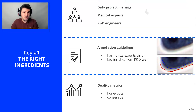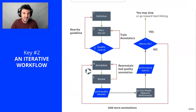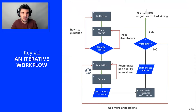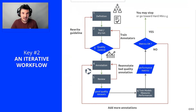Now that we have seen the ingredients, let's see the recipe. We have set up a very simple organization that allows us to quickly find problems in the project framework and iterate to improve it. It starts with a pre-project — steps one, two, and three in this flowchart — which is very important. We start with the definition: we write our guidelines for the current project, explaining the annotation of the classes, the edge cases, etc.